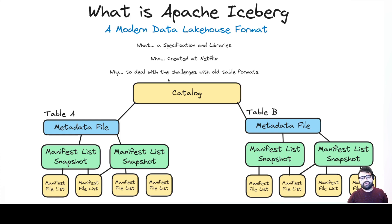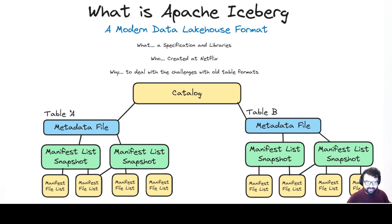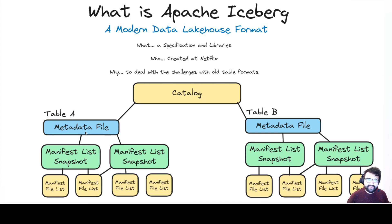Apache Iceberg was created at Netflix to deal with those challenges of older directory-based formats. The way it works is that you have a catalog — which can be one of many different mechanisms — and the catalog does one specific job: it lists the tables. The catalog knows which metadata file is the newest one for each table, because every time a table changes, a new metadata file is created representing the state and schema of the table at that time, and the catalog is updated to point to it.